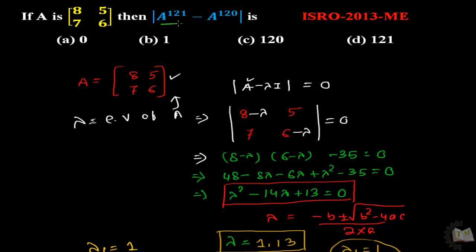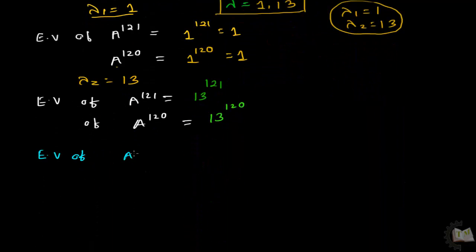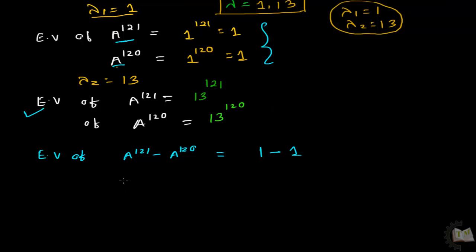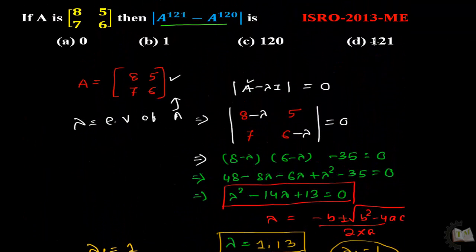Now I have to calculate A^121 minus A^120, meaning the eigenvalue of (A^121 minus A^120). For eigenvalue lambda₁ = 1: it gives 1^121 minus 1^120 = 1 minus 1 = 0. For eigenvalue lambda₂ = 13: it gives 13^121 minus 13^120.